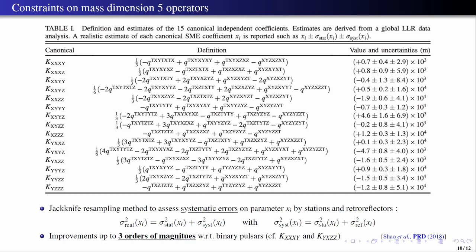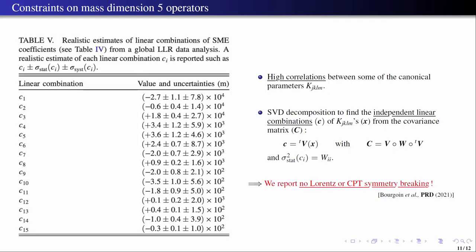So if you do also a kind of a study of the correlation between these parameters themselves, you would find that they are highly correlated, some of them are highly correlated, meaning that the data is not sensitive to each one of these 15 canonical parameters but actually to linear combinations of these parameters. So you can easily find what are these linear combinations, these independent linear combinations that LLR is sensitive to. It's simple, performing a simple SVD decomposition. So what we've done also is to provide not the estimation on the 15 canonical coefficients but on the 15 independent linear combinations of these coefficients. So this is what is reported here. And once again we reported no Lorentz or CPT symmetry breaking terms.